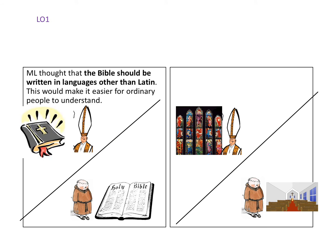Martin Luther also thought that the Bible should be written in languages other than Latin. This would make it easier for ordinary people to understand. Previously, Catholic services and the Bible had been written in Latin — the language of ancient Rome — and only priests could really understand it; ordinary people couldn't understand what was being said in these services. He thought it made far more sense for the Bible to be written in the language people understood best — German if you were in Germany, English if you were in England.